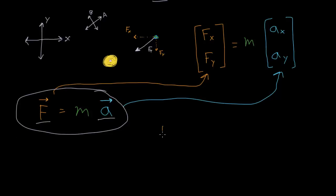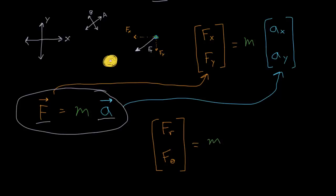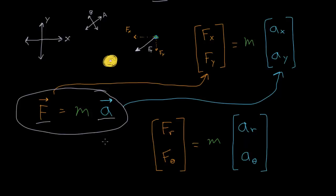So if we did polar coordinates, we'd have a radius and an angle. We can write the force in the radial direction and the force in the theta direction — the direction of the angle, or around the circle. We can write Newton's second law this way: force equals mass times the acceleration in the radial direction, and the acceleration in the angular direction. We can use any coordinate system we want, and I don't know if I can really do justice to how amazing this really is — that we can describe so many things in nature with this one pretty simple equation and just apply it to different situations.